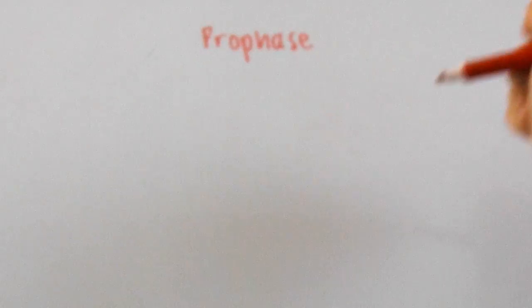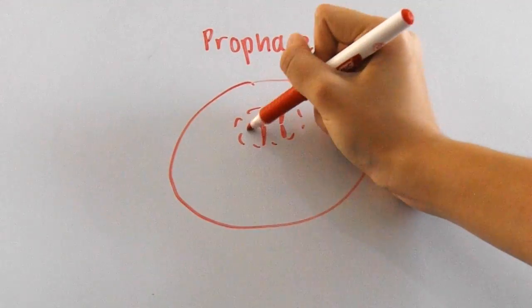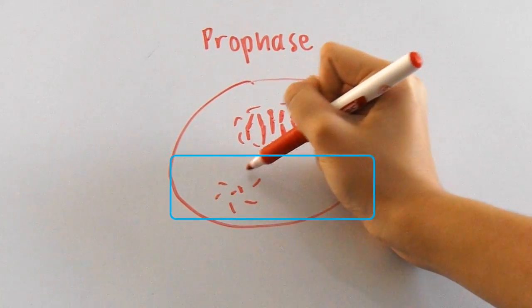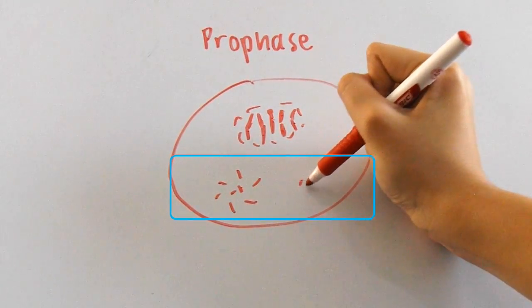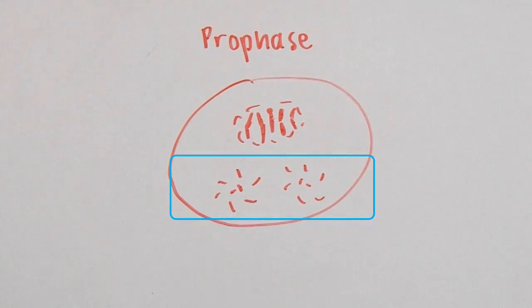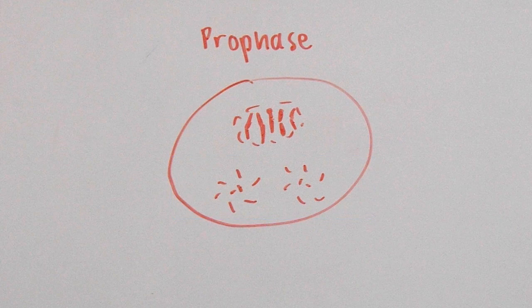Prophase is when chromosomes start to appear, and the nuclear envelope around them begins to disintegrate. These centrioles, which are microtubules or tube-like structures, begin to form asters. These centrioles are extremely important when it comes to actually dividing these chromosomes.